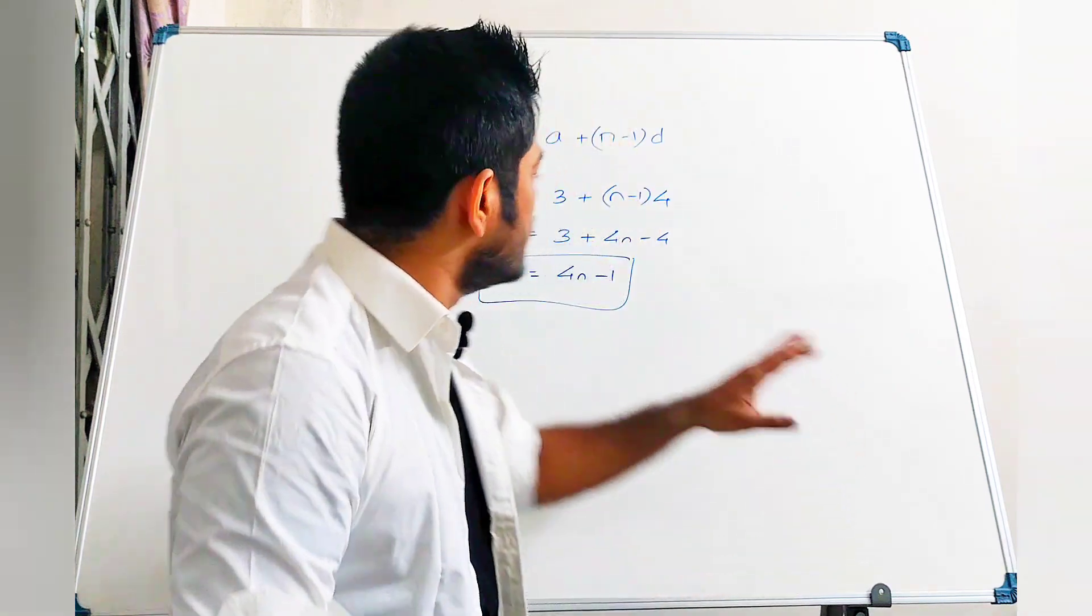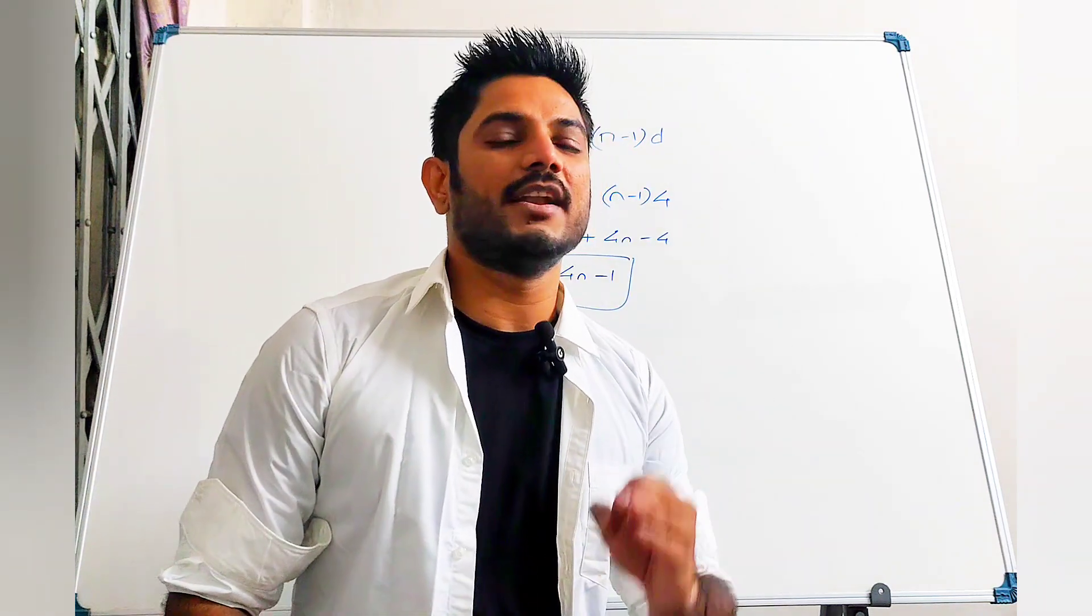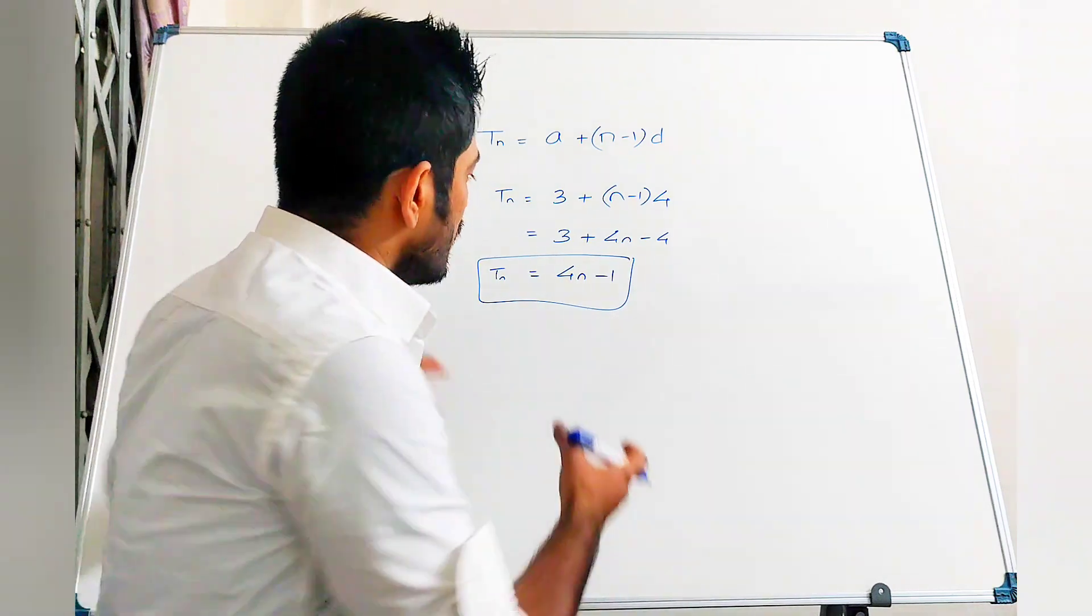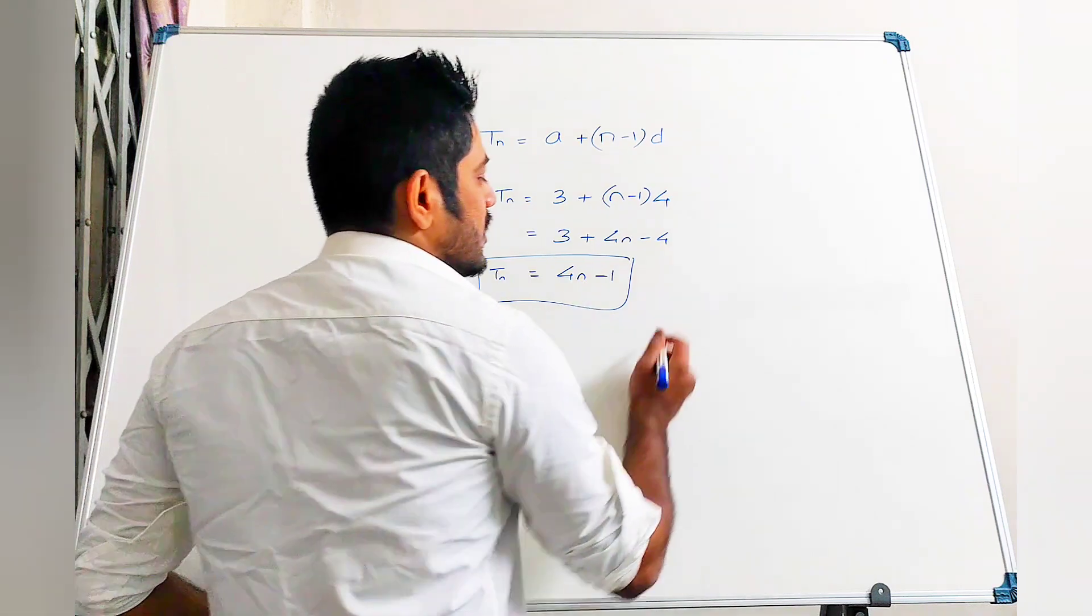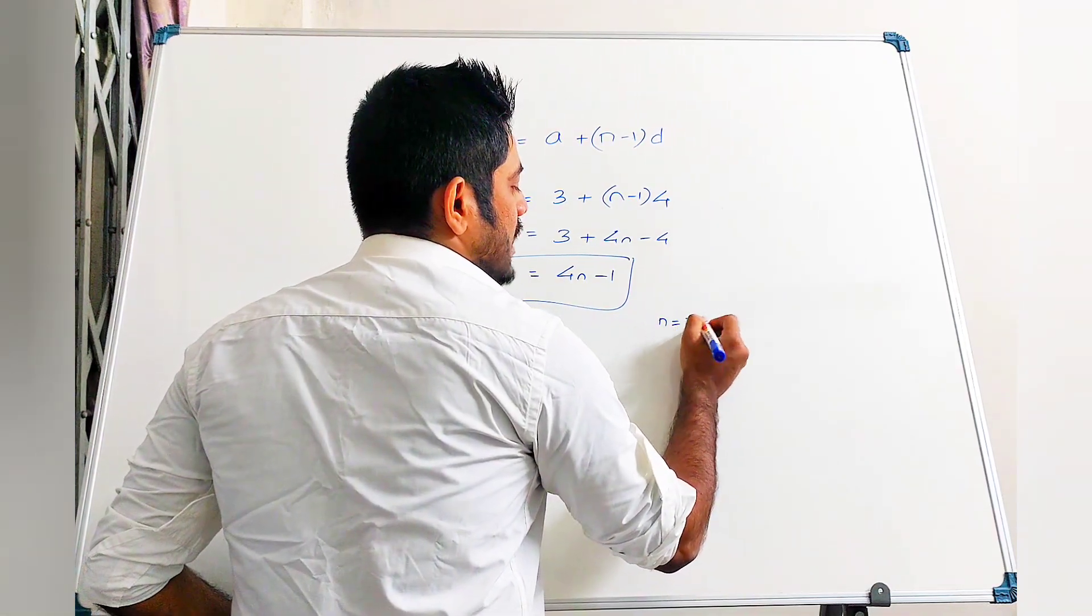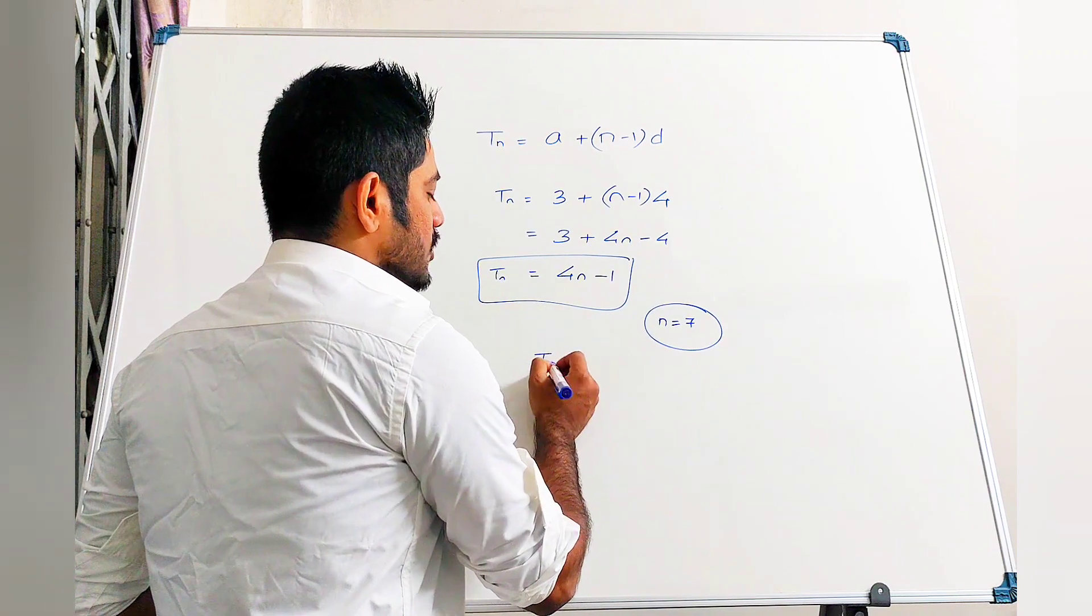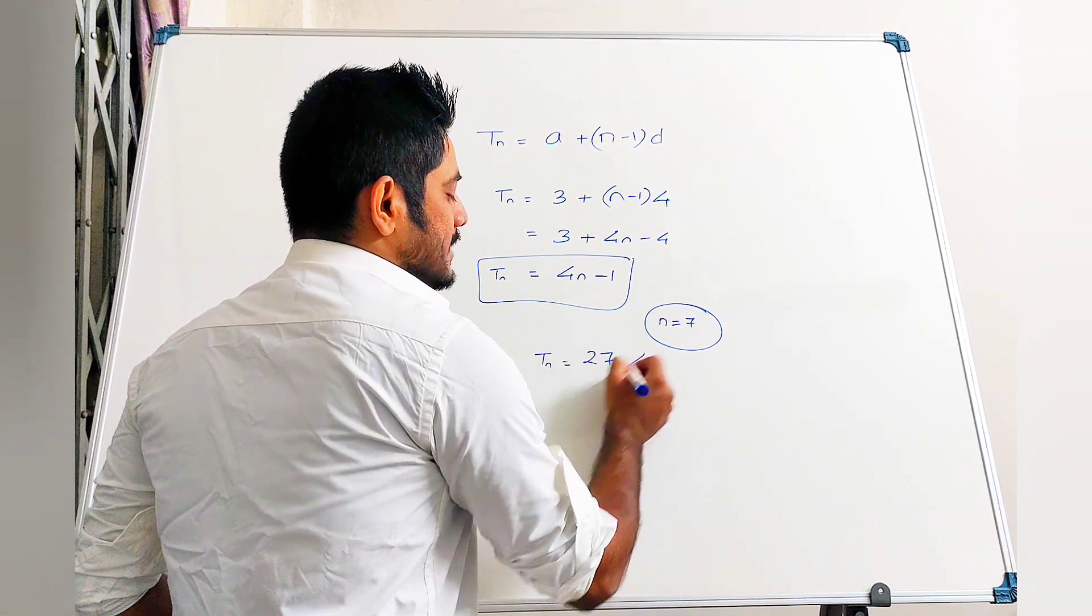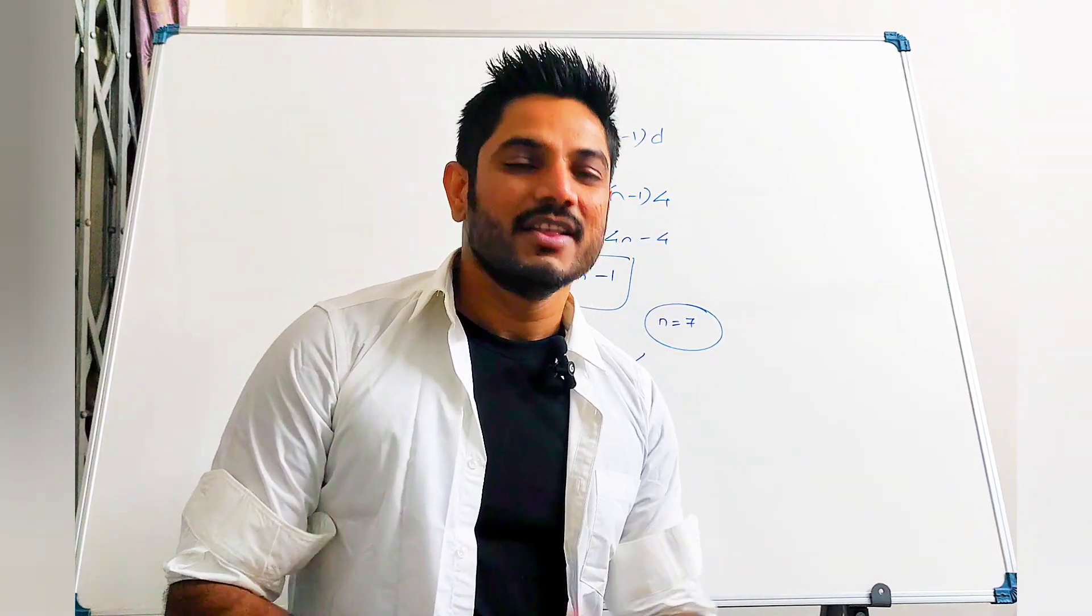This is the value of the nth term in this particular sequence given in the question. It is given that this term, the nth term, is divisible by 9. Find out the minimum value of n which satisfies this condition. Let's start checking the values. Obviously I would go with the options. If I check, only n is equal to 7 satisfies this condition. If I put n equal to 7, I get the value as 27 which is divisible by 9, and that's your answer. Thank you so much.